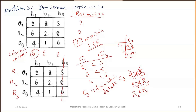One more thing: in the dominance principle, you can also take the average of any two rows and compare it with another row or column. Average of any two rows or columns can be compared with any one row or column to make deletions. This type of problem will be explained in the next session.